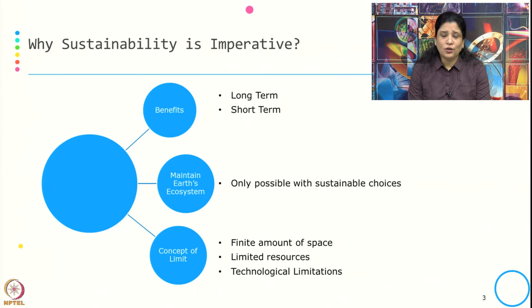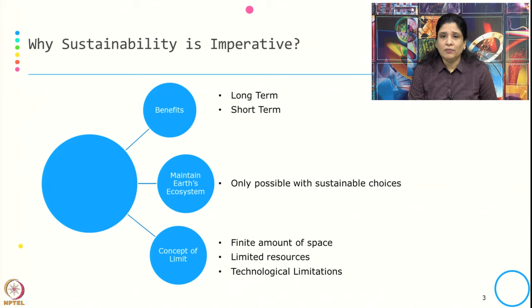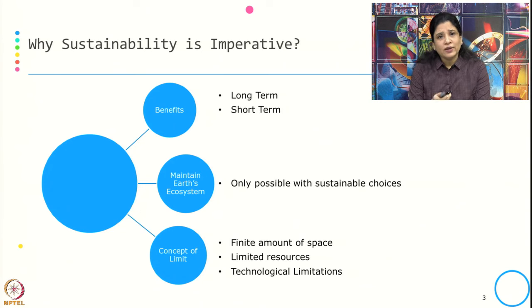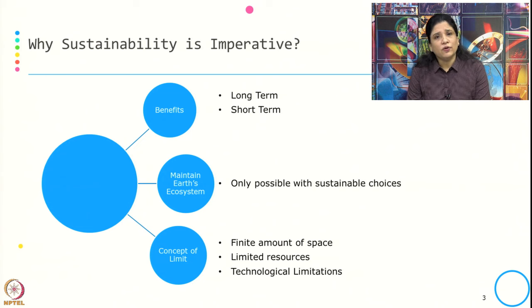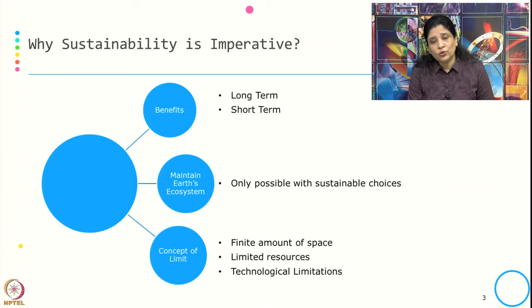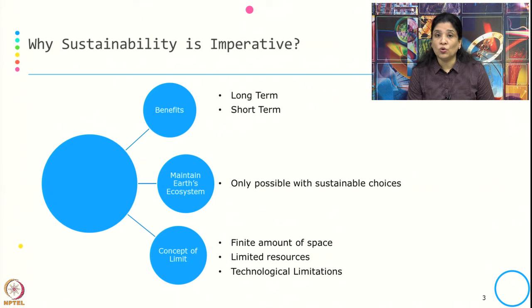The second factor that makes sustainability imperative is the concept of limit. Whatever resources are available to us are limited — not unlimited. This is also basic economics: resources are always limited while human wants are unlimited. In the context of sustainability, we operate with a concept of limit — there is a finite amount of space, limited resources to produce goods and services, and limitations in technology. This concept of limit makes us think that we need to include sustainable practices in our day-to-day and business activities.